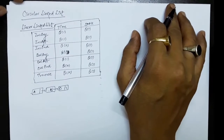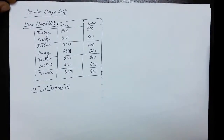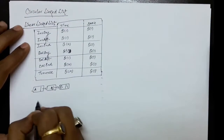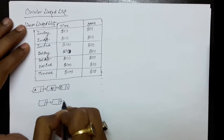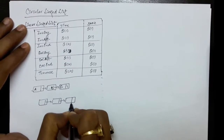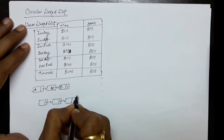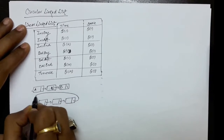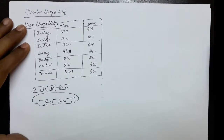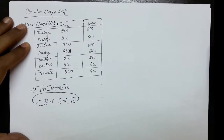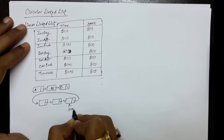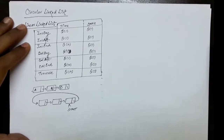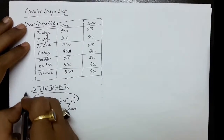In anticipation of that, we have the circular linked list in which we do two modifications. First, the next field of the last node contains the address of the first node. Second, start contains the address of the last node. So these are the two modifications over the linear linked list.